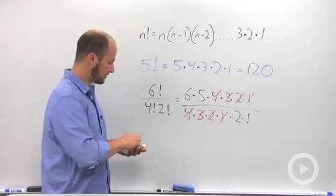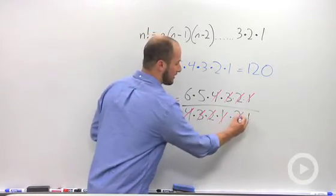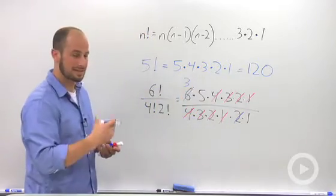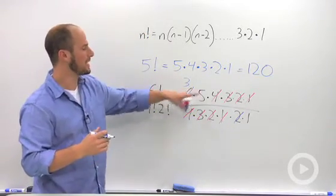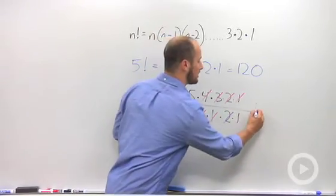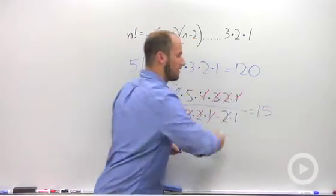Again, we can cancel like terms—not like terms, but we can factor, take out the common factor. Two goes into six, so we're left with three times five on top, nothing on the bottom. So this expression is just equal to fifteen.